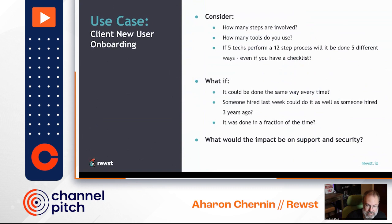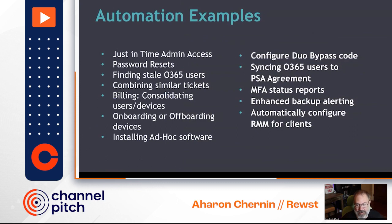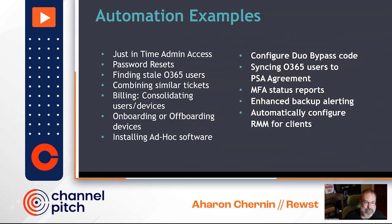Here's a list of automation examples that can be done in your environment: things like finding stale Office 365 accounts, billing consolidation, offboarding, MFA status reports, enforcing MFA, enhanced backup alerting. Think of the things you do every day — you're not just limited to tickets. You can do everything from back-office to CRM-type activities automatically.